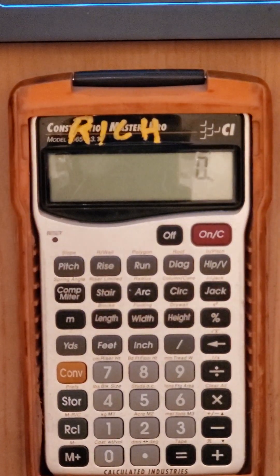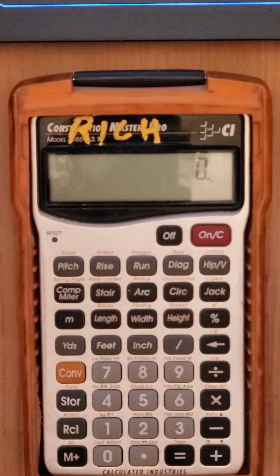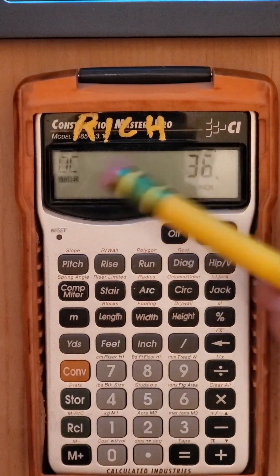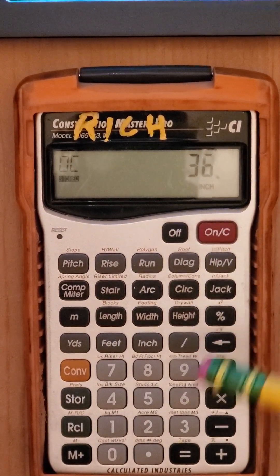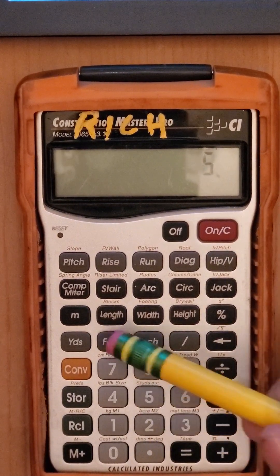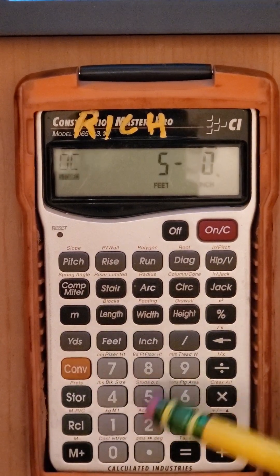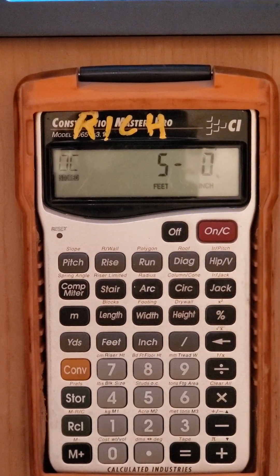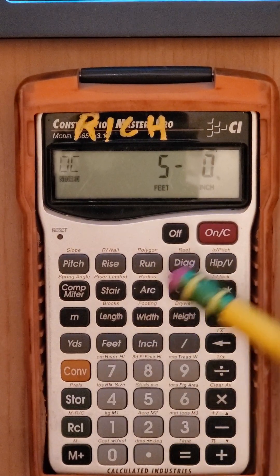Alright, so there's some things you've got to set up. If you go store 5, it'll tell you that the on-center is 36, we want 5 foot. I had to hit clear first, 5 foot, store, and 5. Now it says right there, on-center 5 foot.